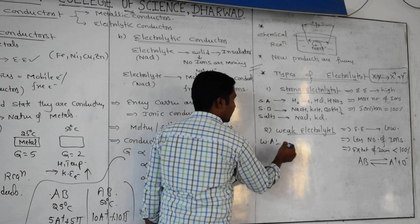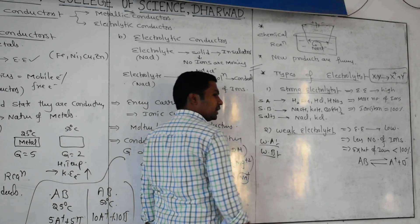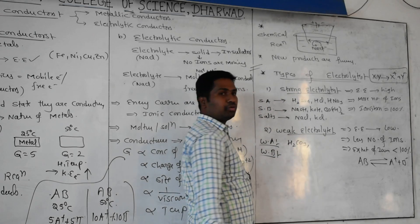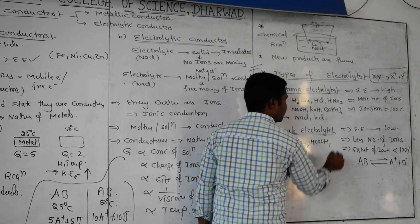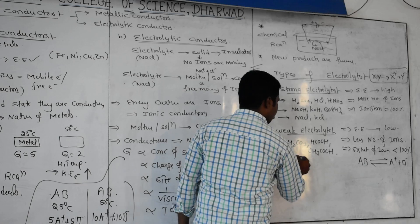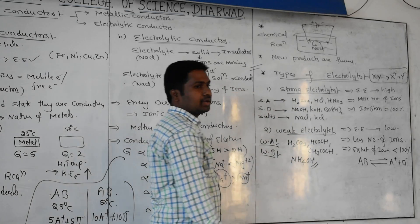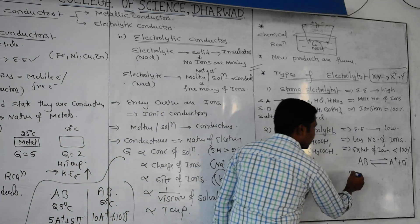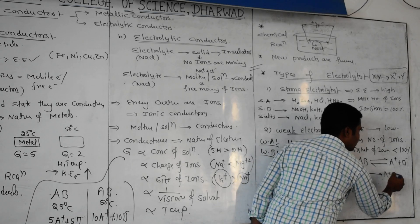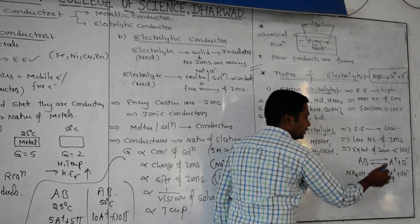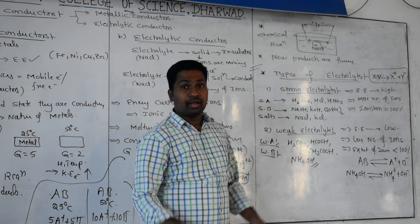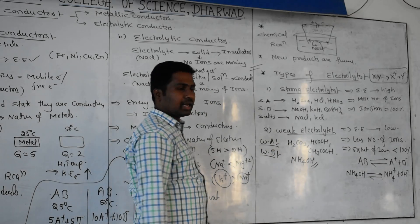Examples of weak electrolytes: weak acids include all organic acids, such as H2CO3 (carbonic acid), HCOOH (formic acid), and CH3COOH (acetic acid). Weak bases include ammonium hydroxide - take 100 molecules, they partially dissociate into NH4+ and OH-, then recombine back to NH4OH, so fewer ions are available and conductance is low.